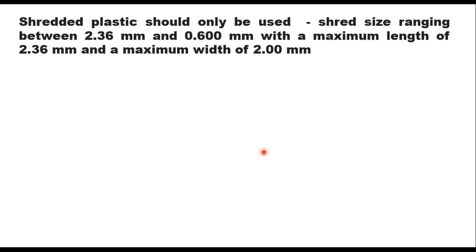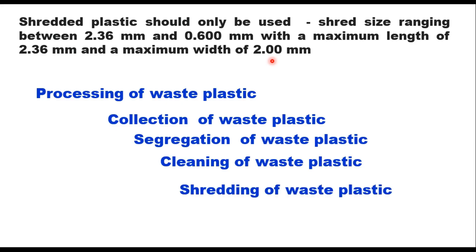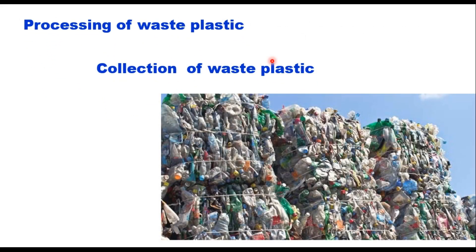Only shredded plastic should be used. The shred size ranging between 2.36 mm and 0.6 mm, with a maximum length of 2.36 mm and a maximum width of 2 mm, is suggested for use in road construction. Processing of waste plastic is a four to five step process: collection of waste plastic, segregation, cleaning, and shredding. Waste plastic is collected from roads, garbage trucks, dump sites, or compost plants, or it can be purchased from rag pickers or waste buyers.